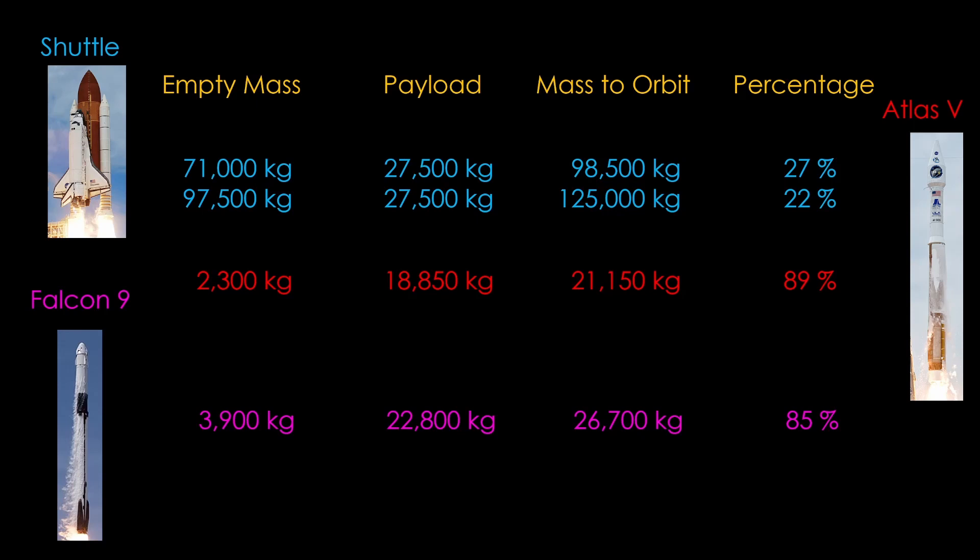As I noted, this is an unfair comparison because neither the Atlas V nor Falcon 9 have reusable second stages, but it does illustrate one of the reasons shuttle V1 was so big and so expensive. It carried nearly 125,000 kilograms of mass to orbit, and only about 27,000 kilograms was payload.